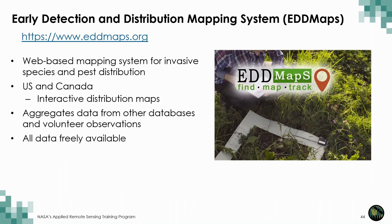The Early Detection and Distribution Mapping System, or EDDMapS, is a web-based platform for documenting invasive species and pest distribution in the U.S. and Canada. It was launched in 2005 at the Center for Invasive Species and Ecosystem Health at the University of Georgia. It was originally designed as a tool for exotic pest plant councils to develop a more complete distribution of invasive species. Through this tool, participants can submit observations or view results through interactive queries in the database, manage their personal records, and visualize data with interactive maps. The data is reviewed and verified prior to appearing on maps, and it's made freely available to everyone.